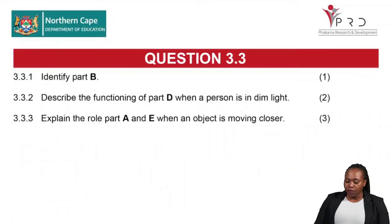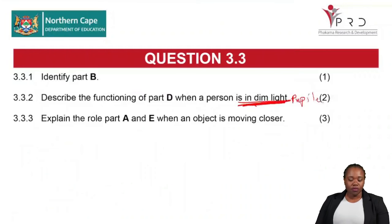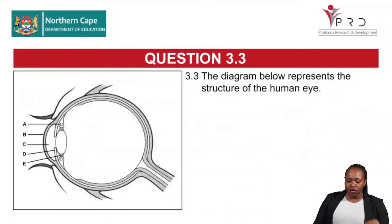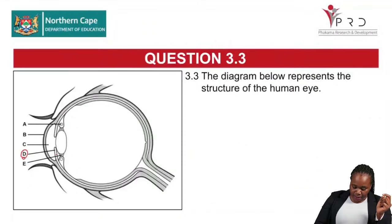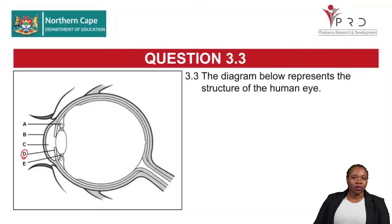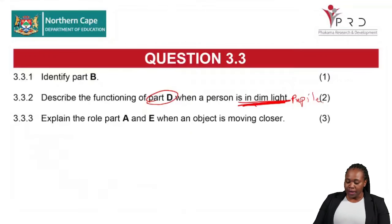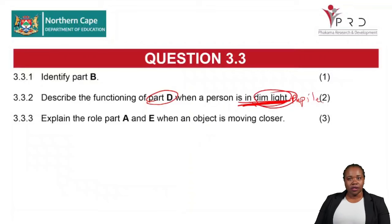Question 3.3.2 asks to describe the functioning of Part D when a person is in dim light. When you hear 'dim light,' think pupillary mechanism. The parts involved are the iris — and indeed Part D is the iris. The iris has circular muscles and radial muscles, both involved in pupillary mechanism. You can learn either bright light or dim light as your base, then work out the opposite.